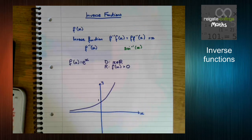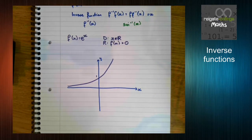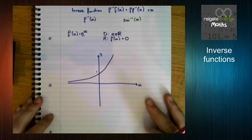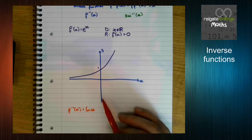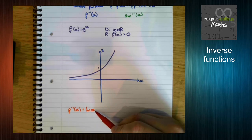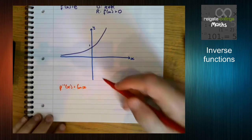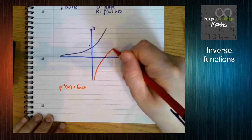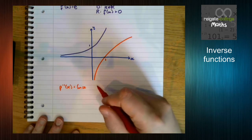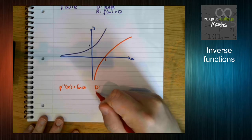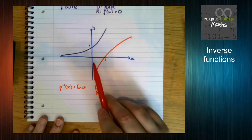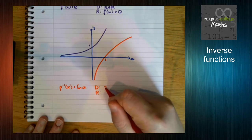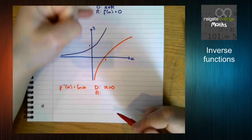But what about the inverse function? What function exists so that if we combine it in any order with e to the x we just get x? Well, if you said the inverse function is natural log of x, you'd be correct. Let's think about the graph of this. Hopefully you already know what the graph of log x looks like — if you don't, it looks like this, crossing at 1. So the domain is x is greater than 0, and we can get any y values out.